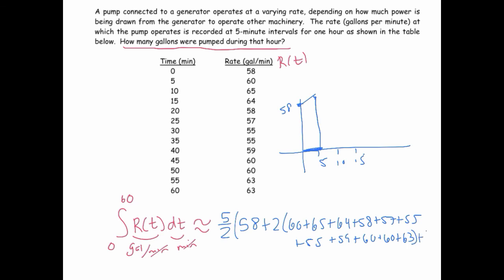and then the last y value gets added, 63. So again, this is the trapezoidal rule.